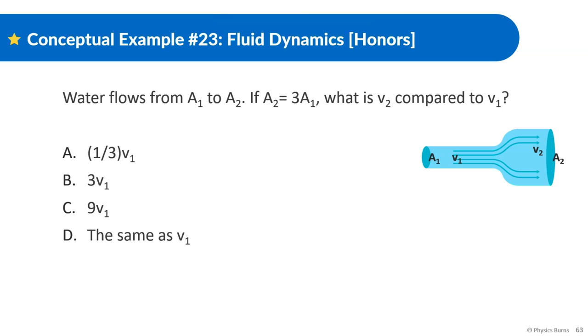Water flows from A1 to A2. If v2 is equal to 4v1, what would A2 equal compared to A1? So we should know again, the formula we have is A1v1 is equal to A2v2. So let's look at this. If A2 is equal to three of A1, meaning it's three times bigger, we can rewrite it like this: A1v1 is equal to three times A1 times v2.